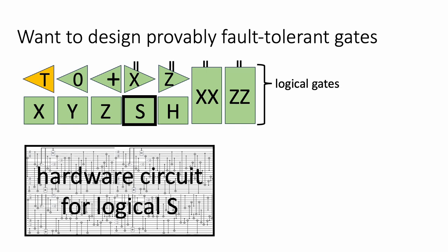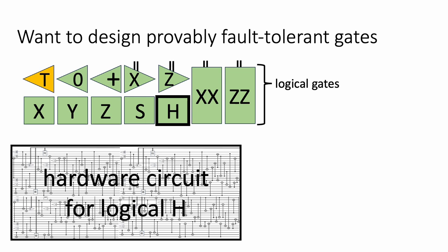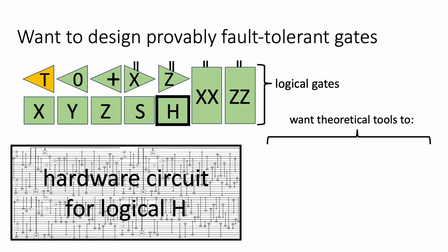Moreover, we want it to be the case that if something goes wrong at the level of the hardware, or some small number of things go wrong, the overall effect is the same — it's robust on the logical encoded information. We would like to be able to build a quantum computer and have some complete set of logical gates, where for each of these we have some specified circuit written in terms of hardware operations to implement an arbitrary computation robustly. These hardware circuits are very complicated, so we would like to have theoretical and computational tools to analyze them — specifically, to verify that a hardware circuit indeed fault-tolerantly implements the desired logical gate.